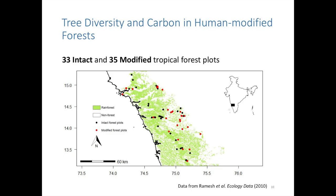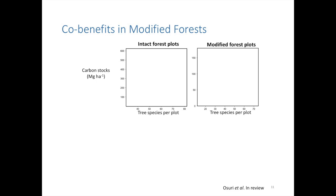To address this question, we used a unique dataset from the central Western Ghats of India — a one-hectare forest plot dataset. What's nice is that the authors categorized their plots into either relatively undisturbed or intact forests, as well as plots within forests that had been affected by humans through past selective logging or forest fragmentation. We looked at the relationship between tree species diversity on the x-axis and carbon stocks on the y-axis, and whether those relationships differed between intact forests and human-modified forests.